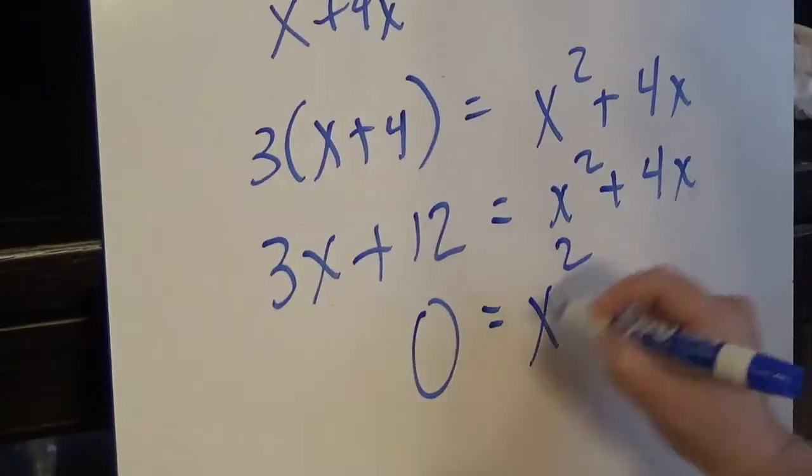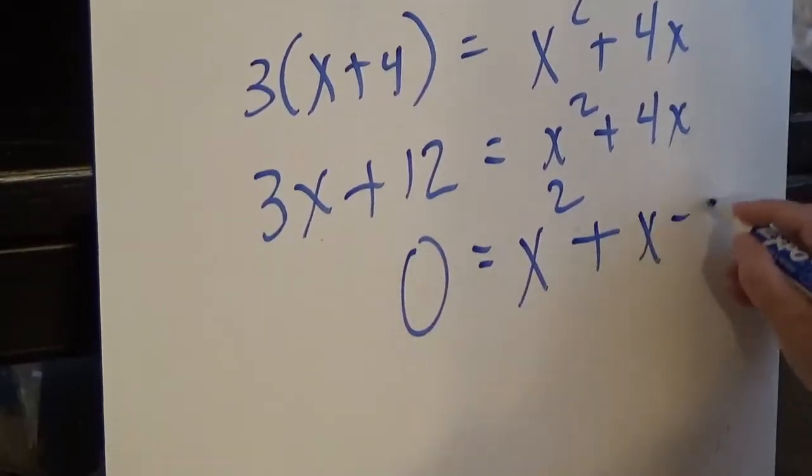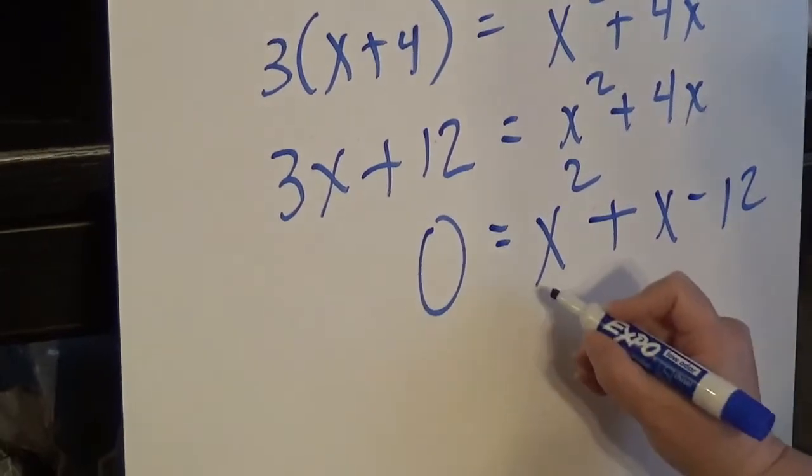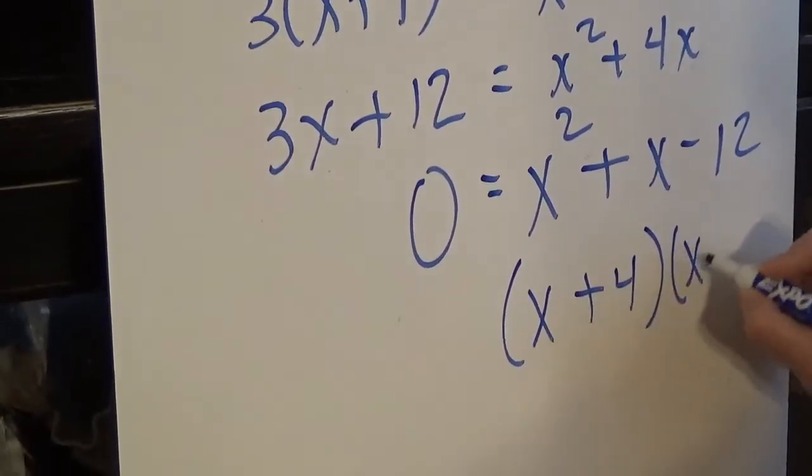So x squared subtract 3x from both sides and subtract 12. And this factors to x plus 4, x minus 3.